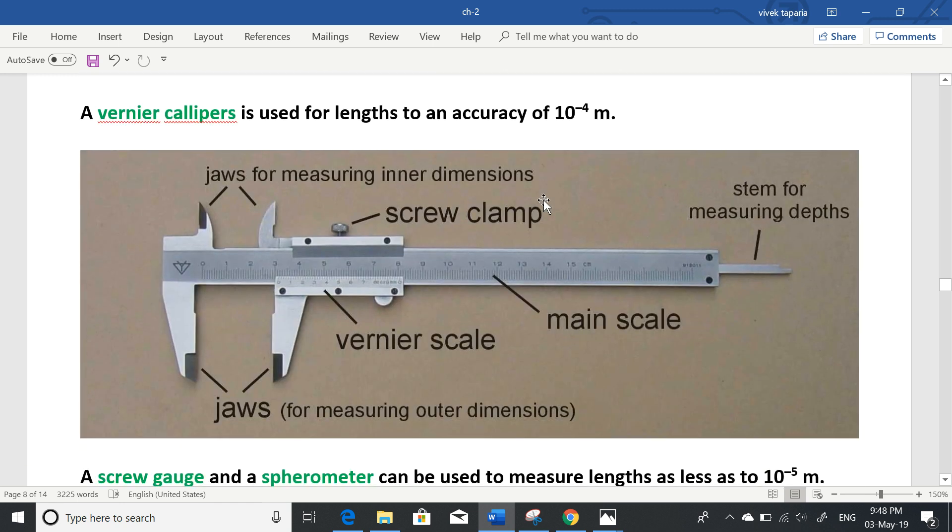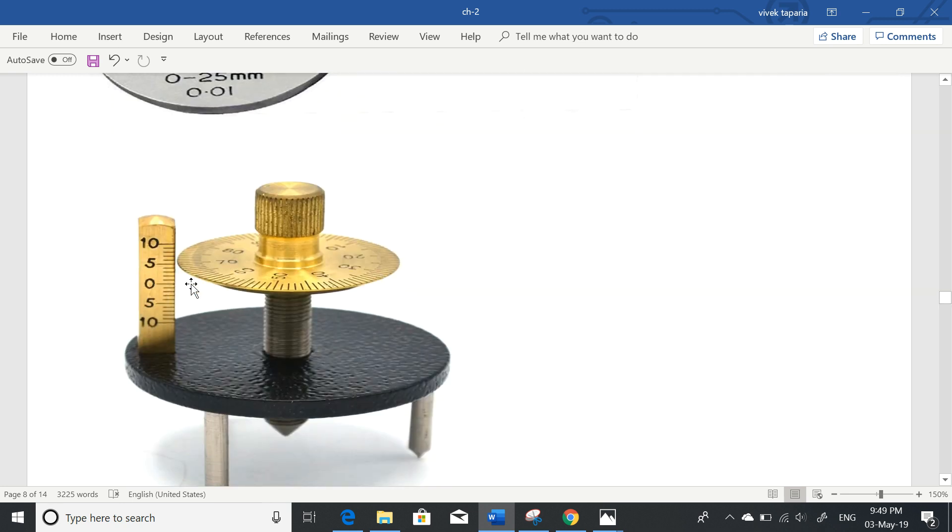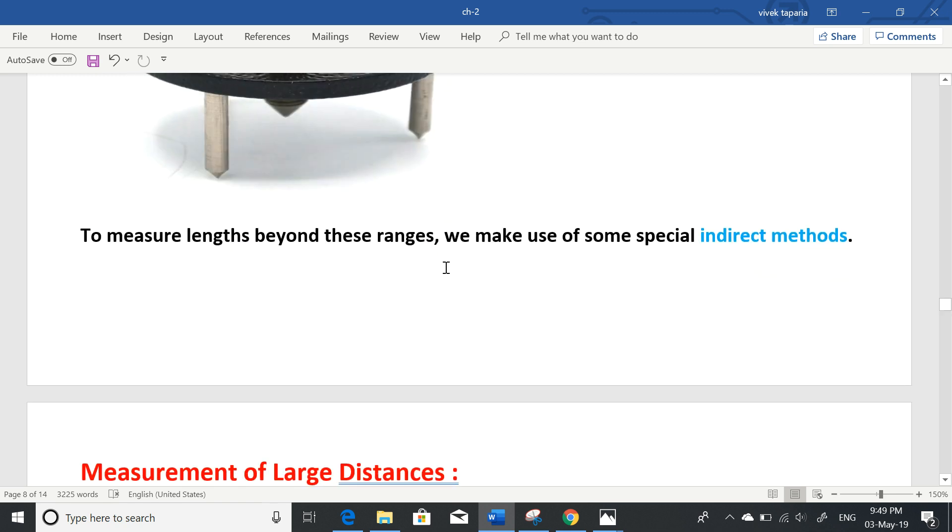For smaller distances, a vernier caliper is used for lengths to an accuracy of 10^-4 meter, which is 0.1 millimeter. We will learn the practical use of vernier calipers in class 11. A screw gauge can measure even smaller lengths with a least count of 0.01 millimeter or 10^-5 meter. To measure lengths beyond these ranges we make use of some special indirect methods.